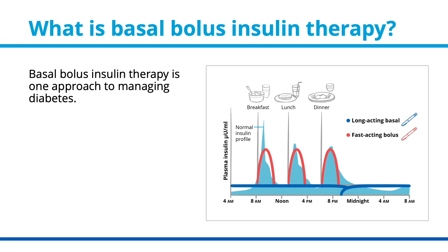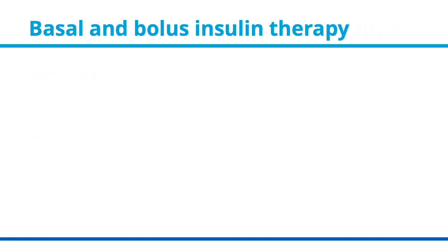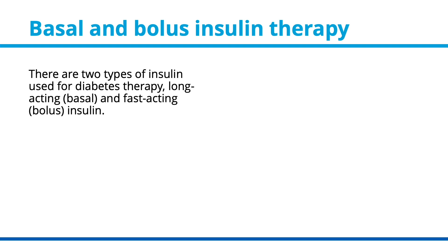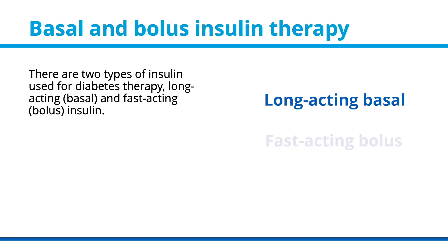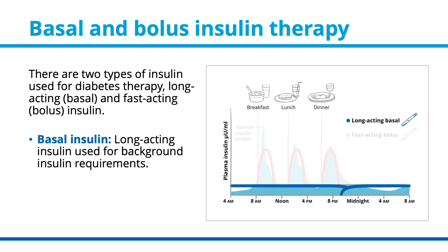Basal bolus insulin therapy is one approach to managing diabetes. It is designed to match insulin doses to carbohydrate intake and blood sugar or glucose levels. There are two types of insulin used: long-acting or basal insulin, which is used for background insulin requirements, and fast-acting or bolus insulin.